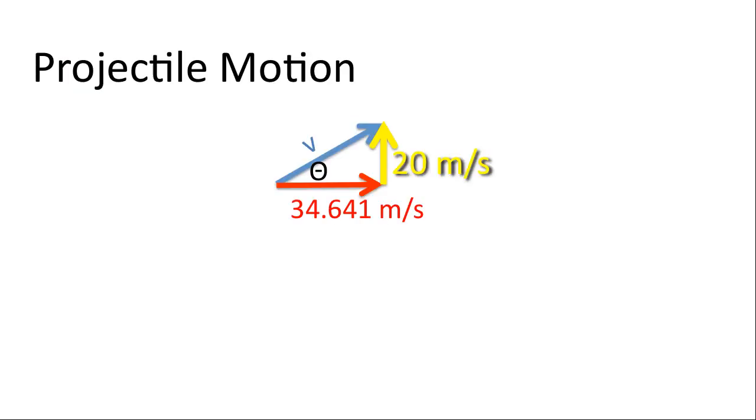Step three, solve for speed. There's our triangle. Here's Pythagorean theorem. And there's our answer. 40 meters per second. The launch angle, we're going to use opposite over adjacent, which is the tangent. Opposite is 20. Adjacent is 34.641. And there's our launch angle. 30 degrees.